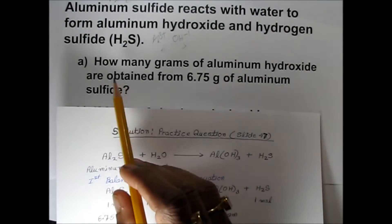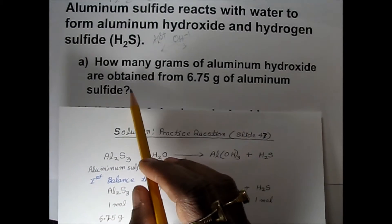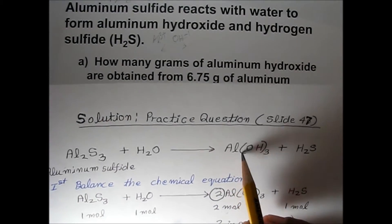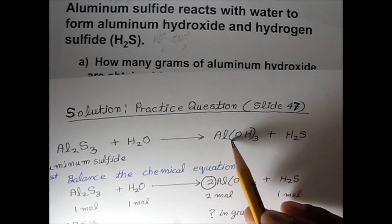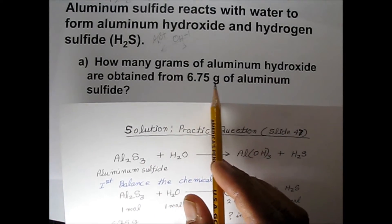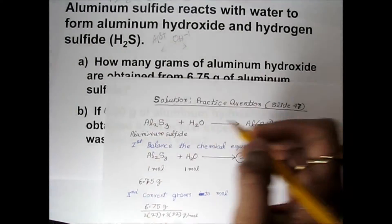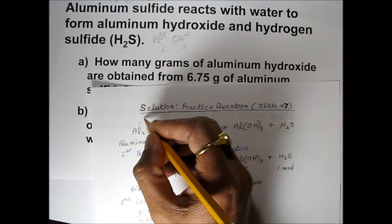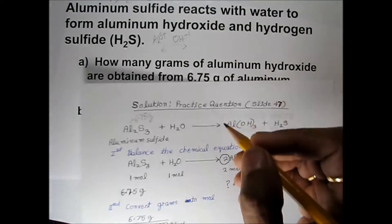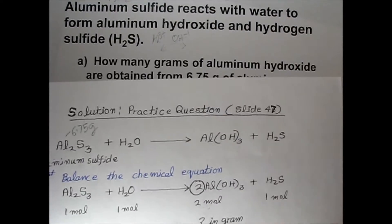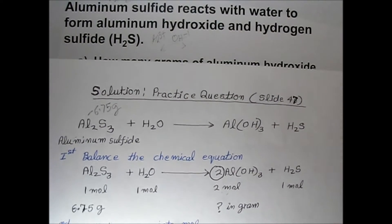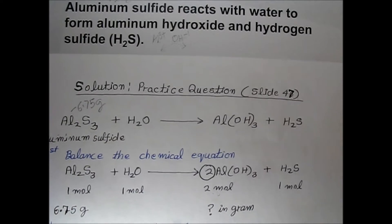The question asks how many grams of aluminum hydroxide are obtained from 6.75 grams of aluminum sulfide. The quantity given is 6.75 grams of aluminum sulfide. Before doing anything, we must first balance the chemical reaction.